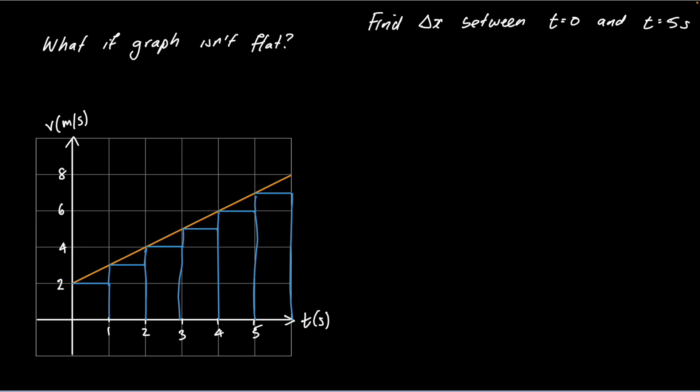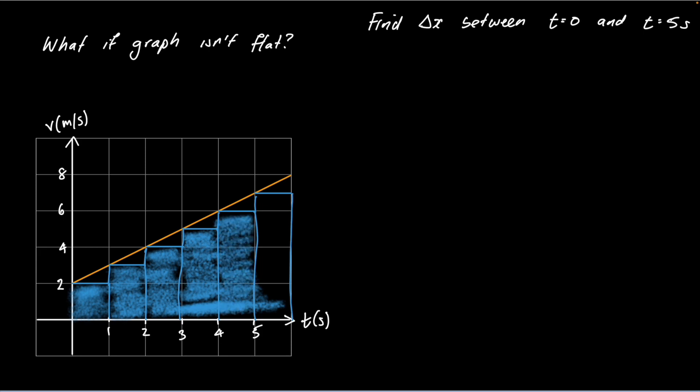We know that the area of this first block is going to give me my displacement during that first second. The area of that second block will give me the displacement during the second second. I can work out all these individual displacements, delta x1, delta x2, and so on. My overall displacement will be those added together.